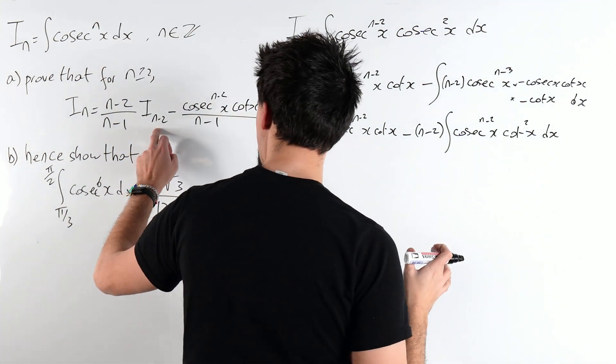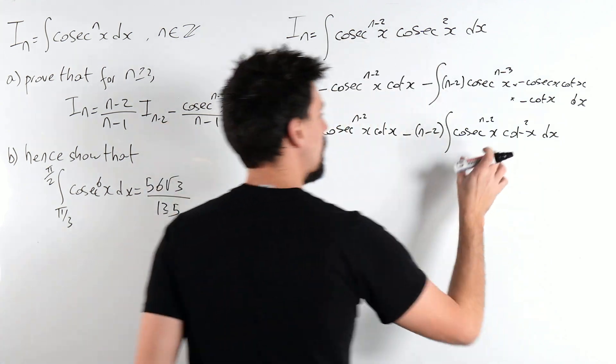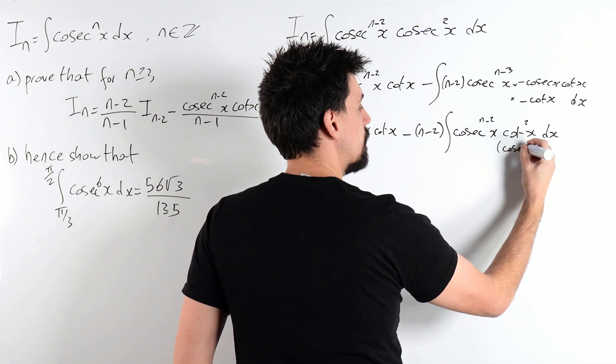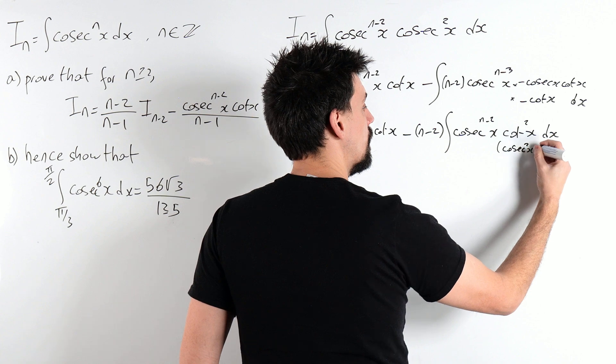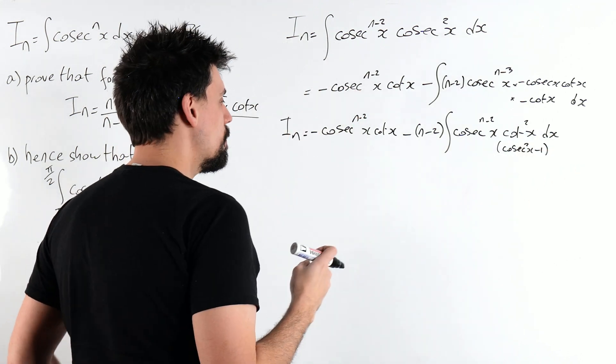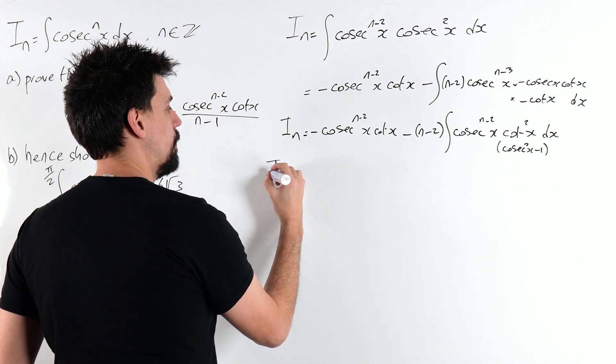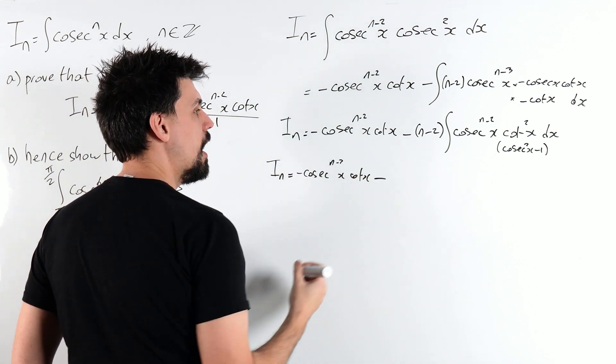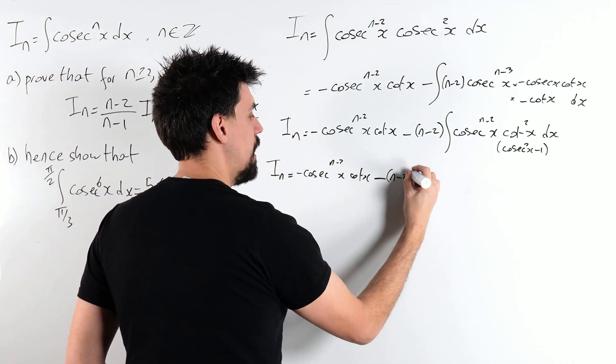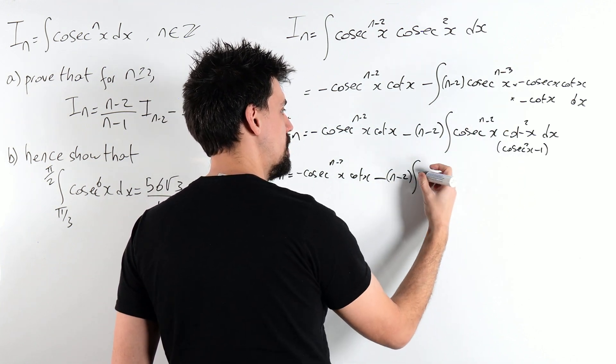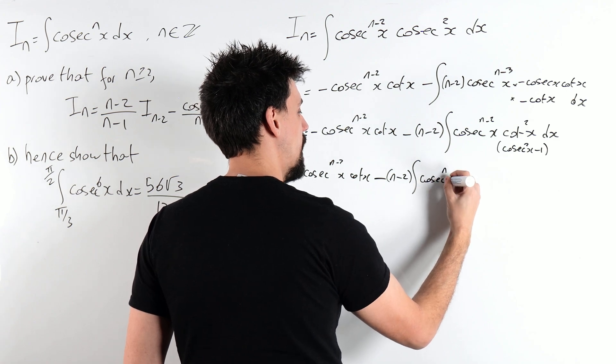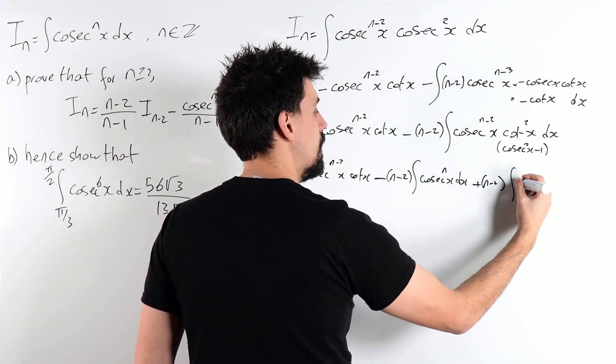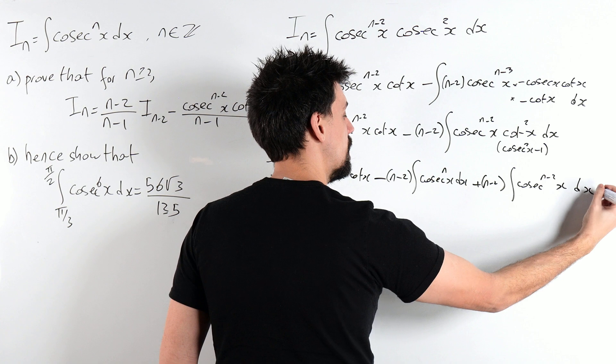Alright, now we want to get away from this. The only integral I want left is i_n-2 over here. So let's play around. But we do know that cot squared is cosec squared x minus 1. So we can expand that. i_n is minus cosec to the n-2 x cot x minus n-2, the integral of cosec to the n-2 times cosec squared, cosec to the n of x dx.